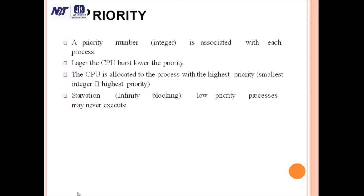In priority scheduling, starvation can happen. In starvation, a lower priority process may never execute — all the time the higher priority processes get the chance for execution and lower priority processes wait indefinitely. This condition is known as starvation. The solution of starvation is aging. In aging, as time progresses, the priority of the process increases. If a process has lower priority and doesn't get a chance to execute, after a time interval the priority of that process increases, and eventually it gets the highest priority and executes.